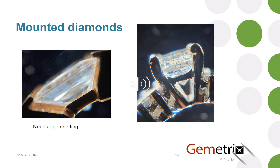One of the problems with the technique is that if a stone is mounted it can be quite difficult to see the pattern, but if the mounting is proud, allowing observation through the pavilion, then it is possible to get a view. Looking at the one on the left, you can see it's hard to know if it's natural or HPHT-treated. As it turns out it was natural, but it's not obvious, whereas the one on the right it is quite clear that that's a natural growth pattern.